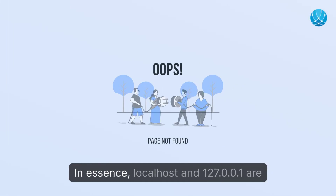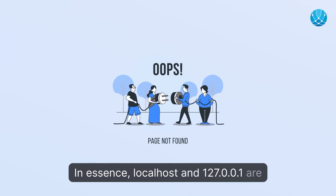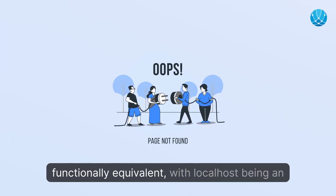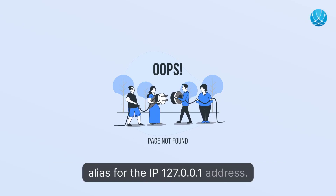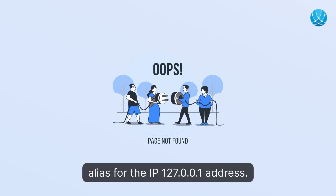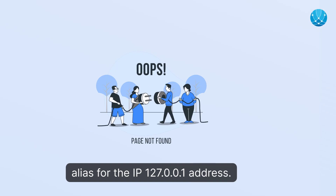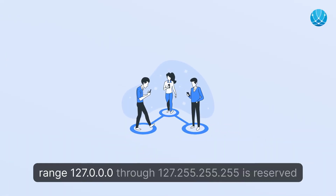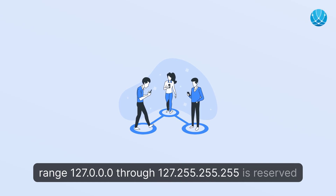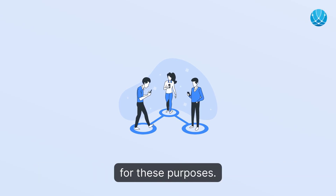In essence, localhost and 127.0.0.1 are functionally equivalent, with localhost being an alias for the IP address 127.0.0.1. Remember, any IPv4 address in the range 127.0.0.0 through 127.255.255.255 is reserved for these purposes.